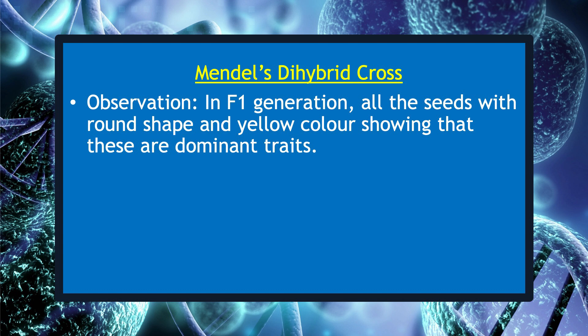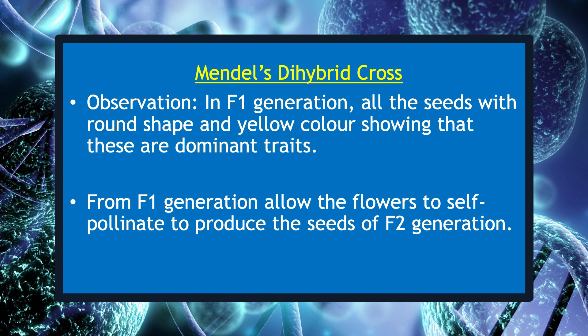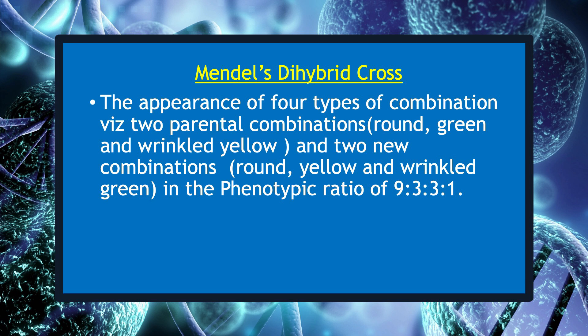He observed that in the F1 generation, all the seeds had round shape and yellow color, showing that these are dominant traits, as you can observe through the given picture. He then raised plants from F1 generation seeds and allowed the flowers to self-pollinate to produce the seeds of the F2 generation. He observed the appearance of four types of combinations, with two parental combinations — round green and wrinkled green — in the phenotypic ratio of 9:3:3:1.